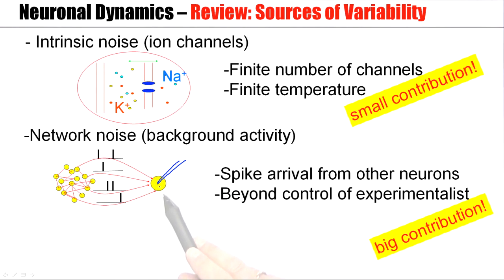It's out of the control of the experimentalist. While the stimulus applied is always the same, spike arrivals caused by spiking from other neurons is beyond control, and this contributes to the variability of neuronal outputs.